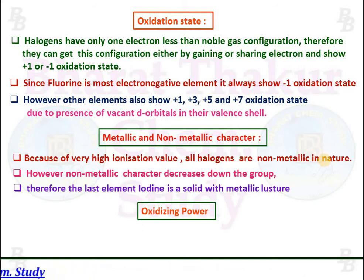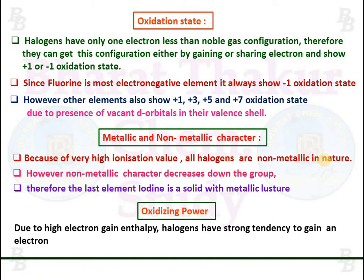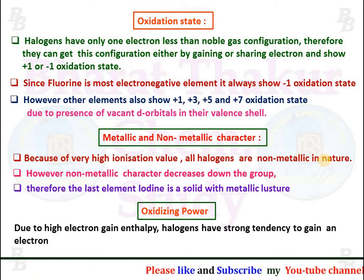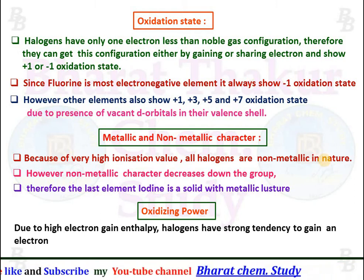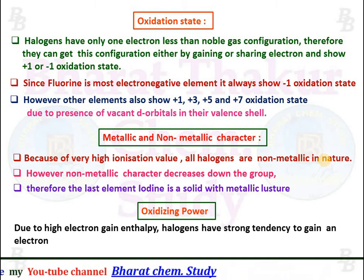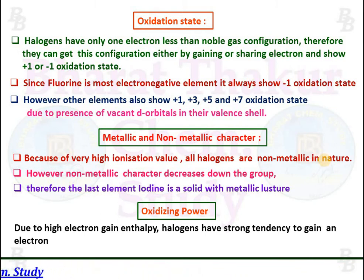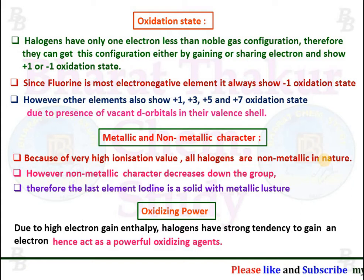Oxidizing power: due to high electron gain enthalpy, halogens have a strong tendency to gain an electron, and therefore act as powerful oxidizing agents.